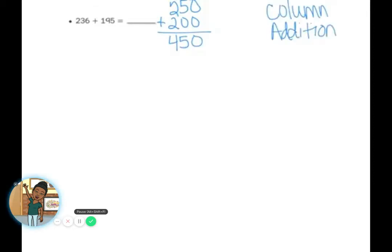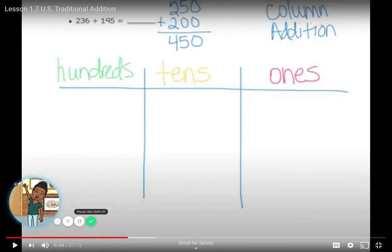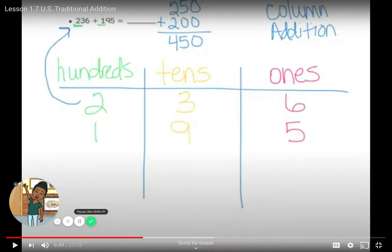For this problem we are going to use column addition. I'm going to write my columns — my place value chart — exactly what we practiced last week. I have columns for ones, tens, and hundreds. If my number were 1,236, I'd add another column, but here it stops at hundreds. Now I'll copy my numbers into the right columns: from 236, I have 2 hundreds, 3 tens, and 6 ones.